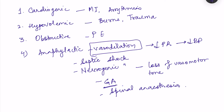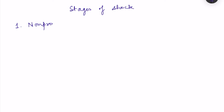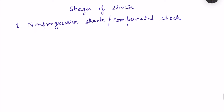Circulatory shock progresses in stages. Initially the shock severity is not that much because the body's compensatory mechanisms are enough to maintain blood pressure despite the cause of shock. But if no intervention is done, it will progress into more severe stages. Based on how the body responds, there are three stages: non-progressive shock (which will correct itself), progressive shock, and irreversible shock.